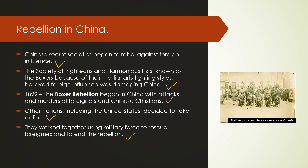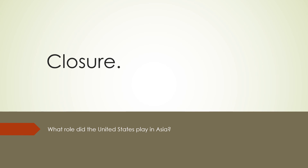The United States, France, Germany, and England used military force to rescue foreigners and end the Boxer Rebellion. It lasted about a year — maybe a little less — but still had an impact on foreign influence in China. For closure, think about what role the United States played in Asia: American trade goals in East Asia and China, the Open Door Policy, and the Boxer Rebellion.